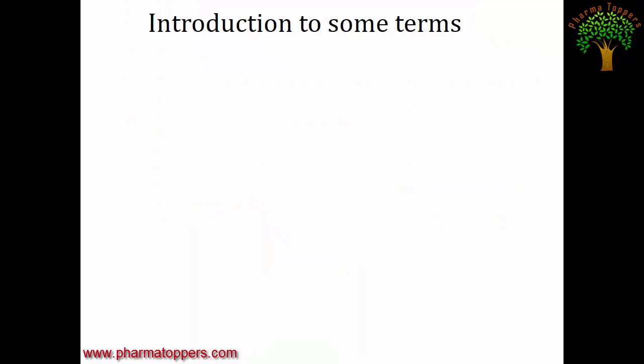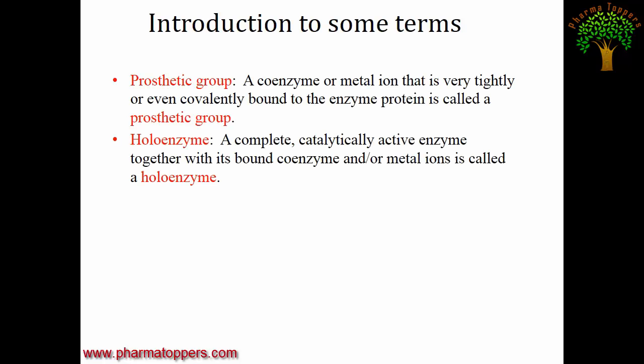Let me introduce two more terms: prosthetic group and holoenzyme. A co-enzyme or metal ion that is very tightly bound to the enzyme protein is called a prosthetic group. For example, if Mn²⁺ is tightly bound to an enzyme, that Mn²⁺ is called a prosthetic group.